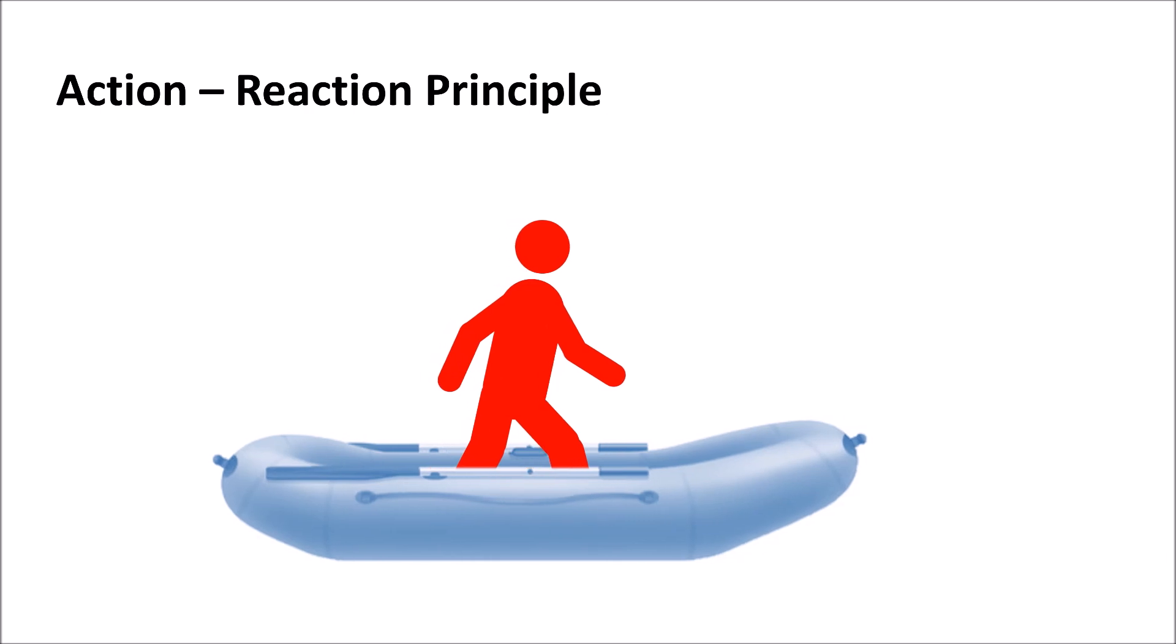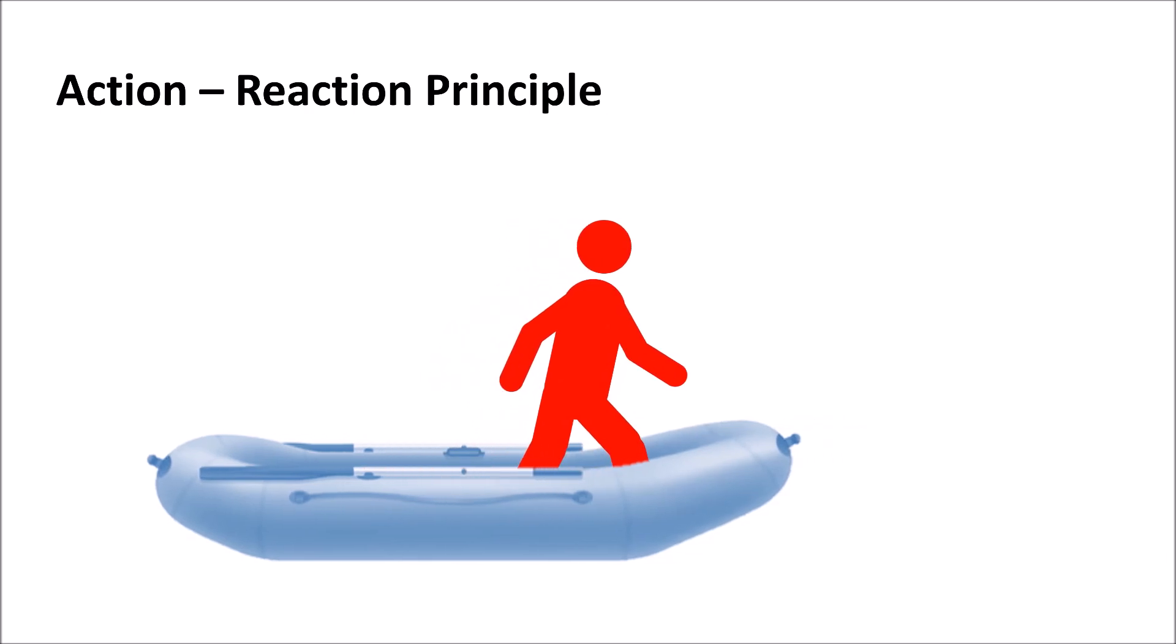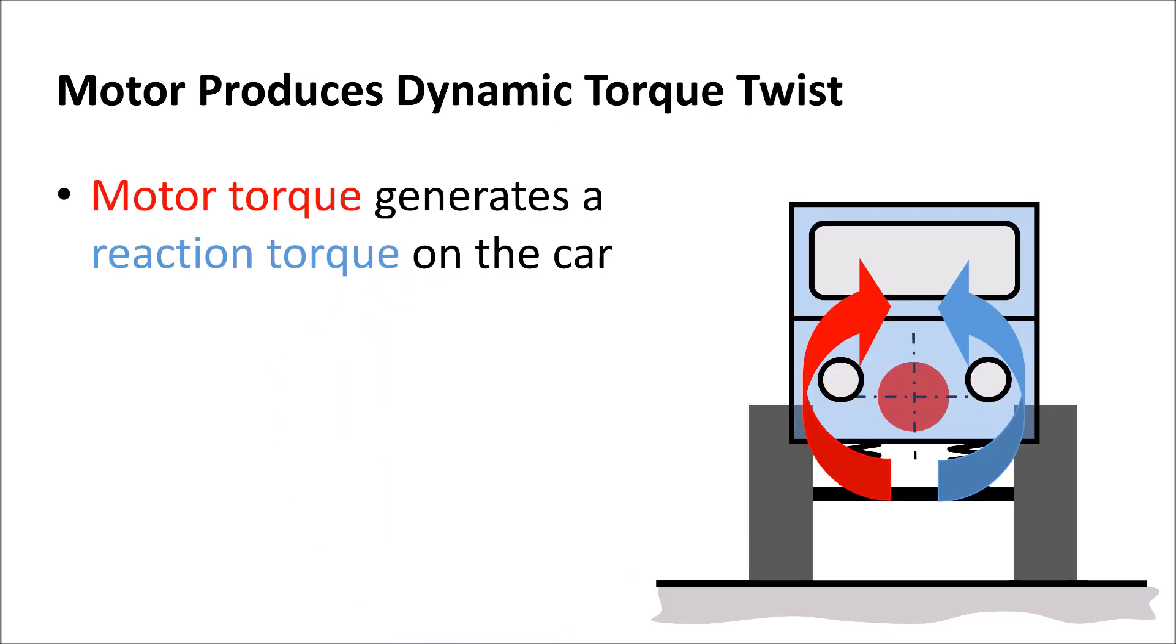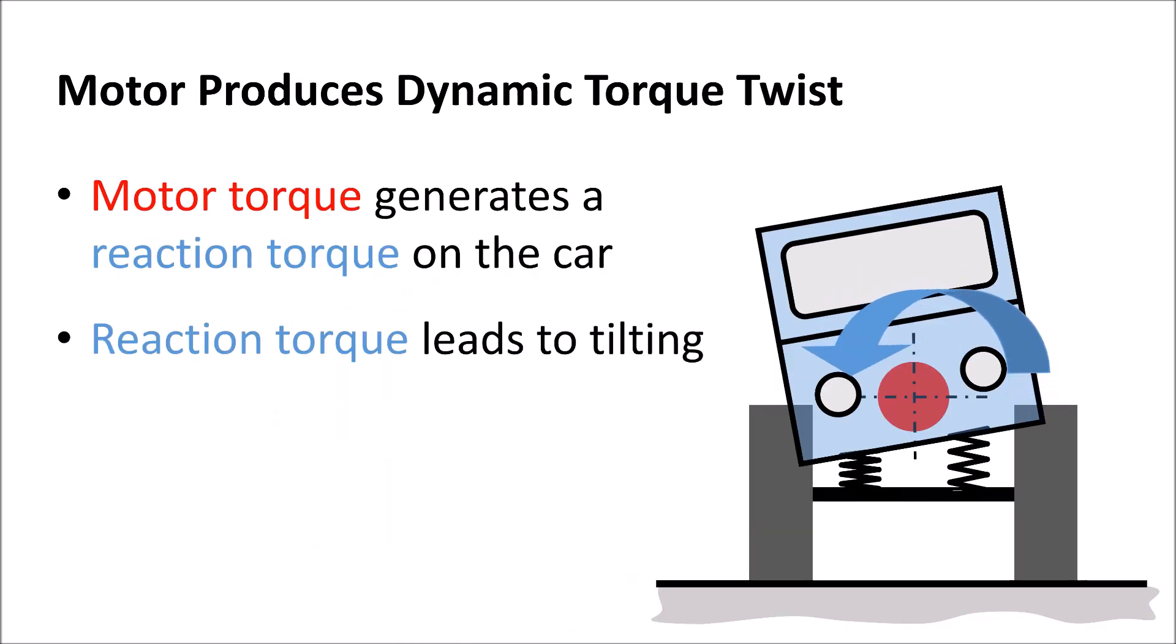Stepping on a lightweight boat makes the boat move backwards. Rotating on it makes us rotate in the opposite direction. The same happens with the chassis and body when the motor starts to rotate. This effect is called dynamic torque twist.